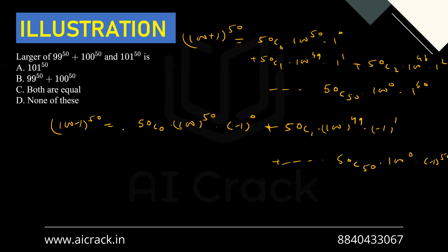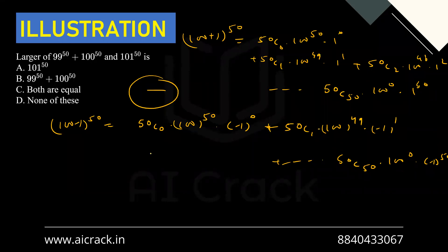Now subtracting (100-1)^50 from (100+1)^50: since we're subtracting, the even-power terms cancel (because (-1)^0 = 1^0, etc.), while the odd-power terms double. So 101^50 - 99^50 = 2·[50C1·100^49 + 50C3·100^47 + ... + 50C49·100^1].